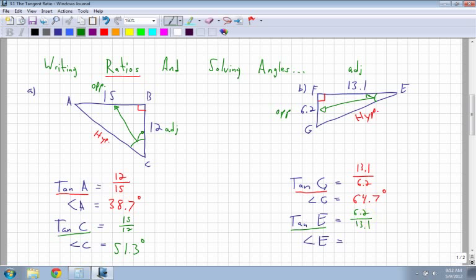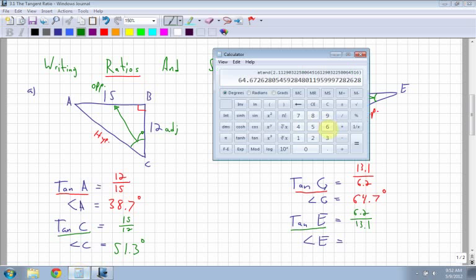Students ask me all the time, how do you know what the ratio is? How do you know which is the opposite? How do you know which is the adjacent? Well, first of all, hypotenuse never changes. Opposite is always straight across from your reference angle. The reference angle is always given to you. You're always asked to find tan E or tan G.